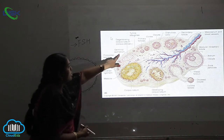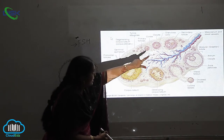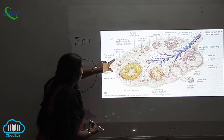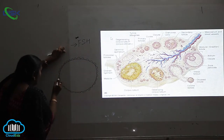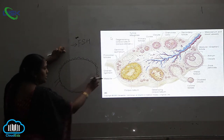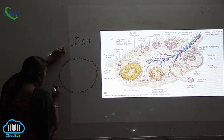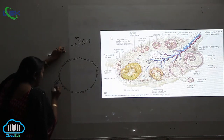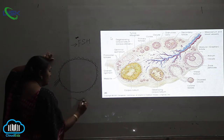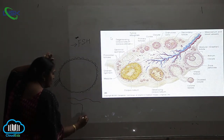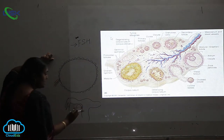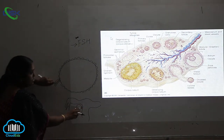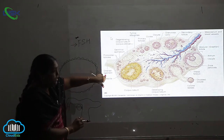The germinal layer is the outermost region of the ovary. You can also see a hand-like structure connecting the ovary, which is called the ovarian ligament — as mentioned in the previous diagram where the ovary connects via this ligament.